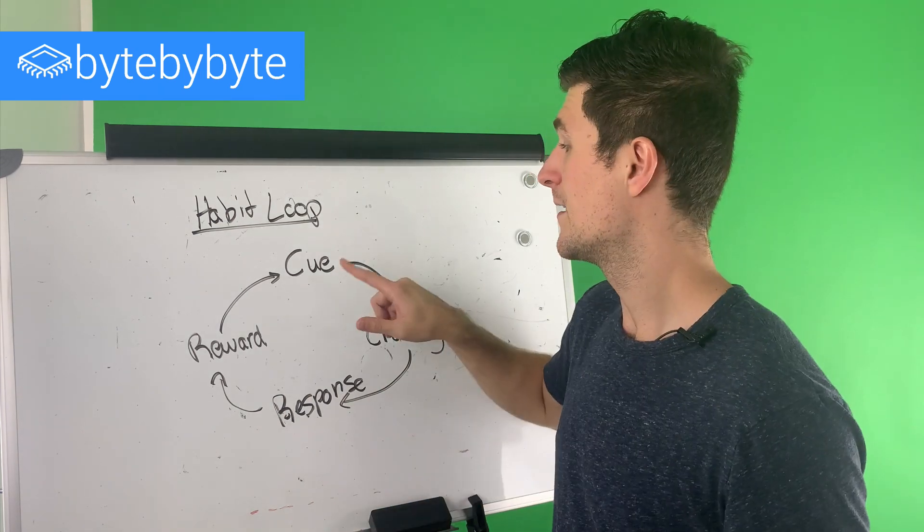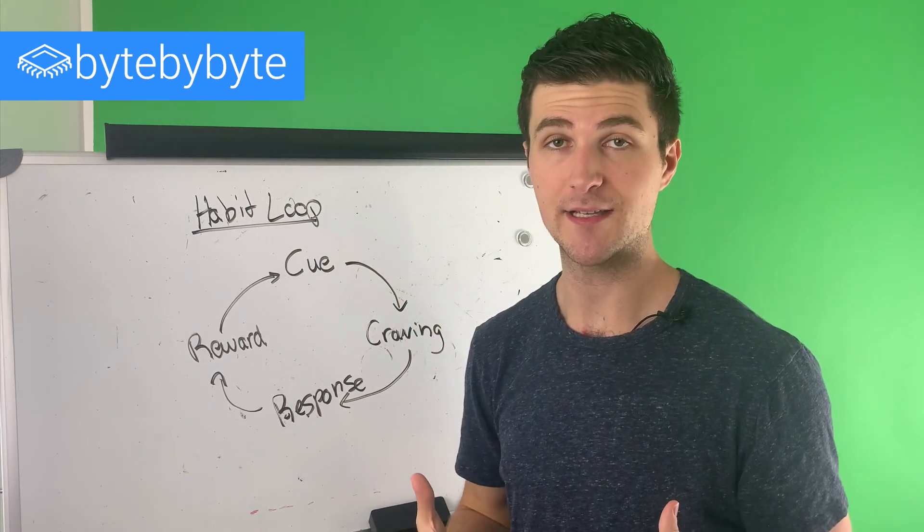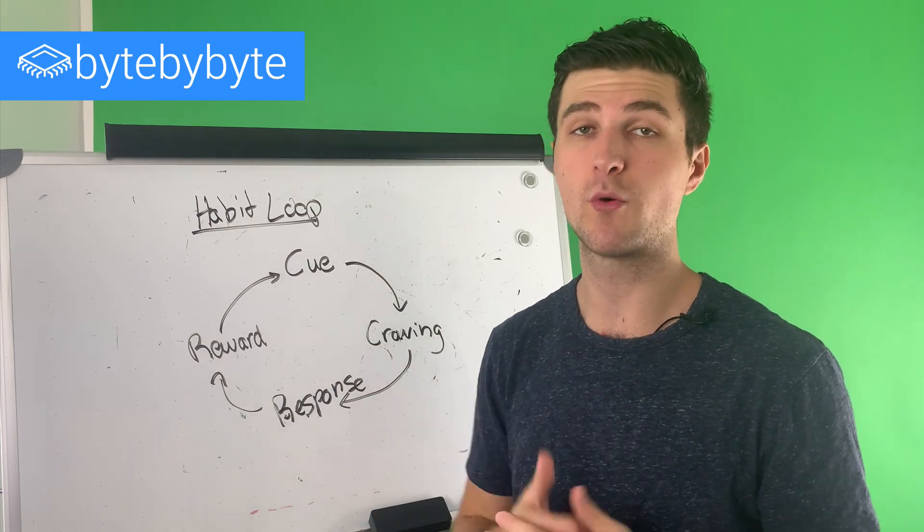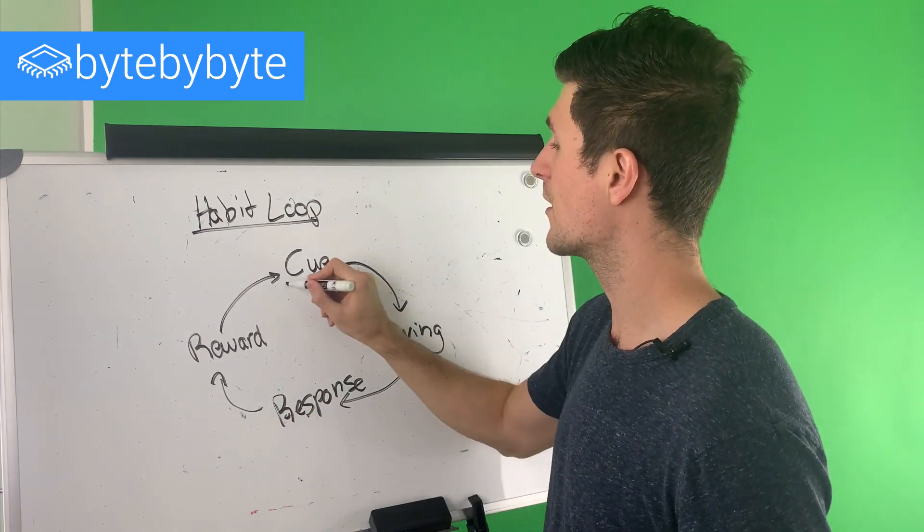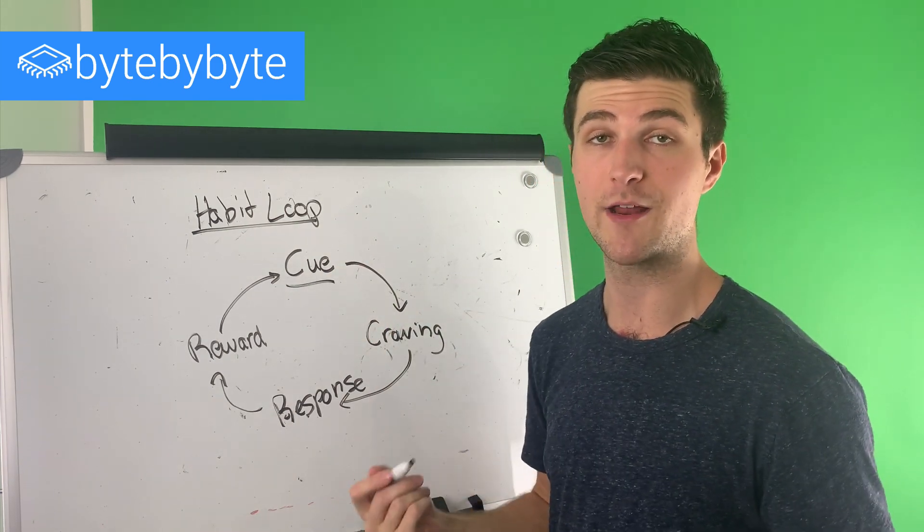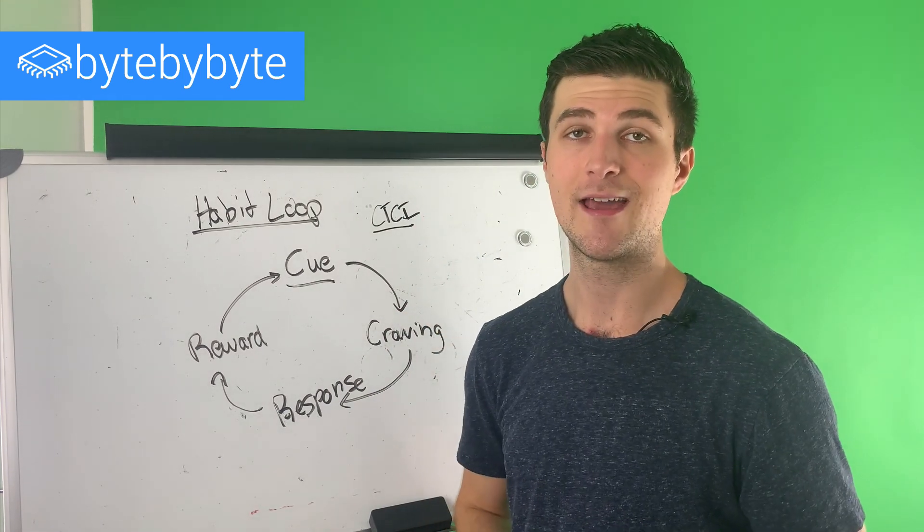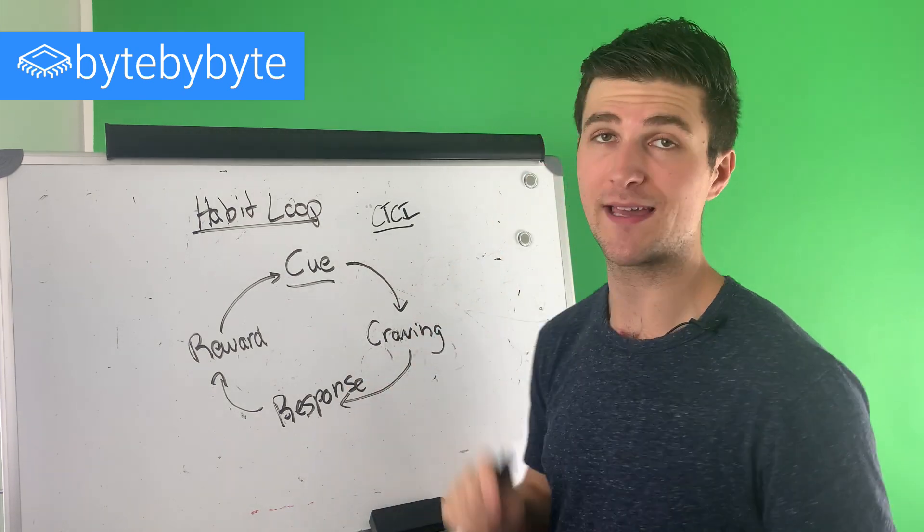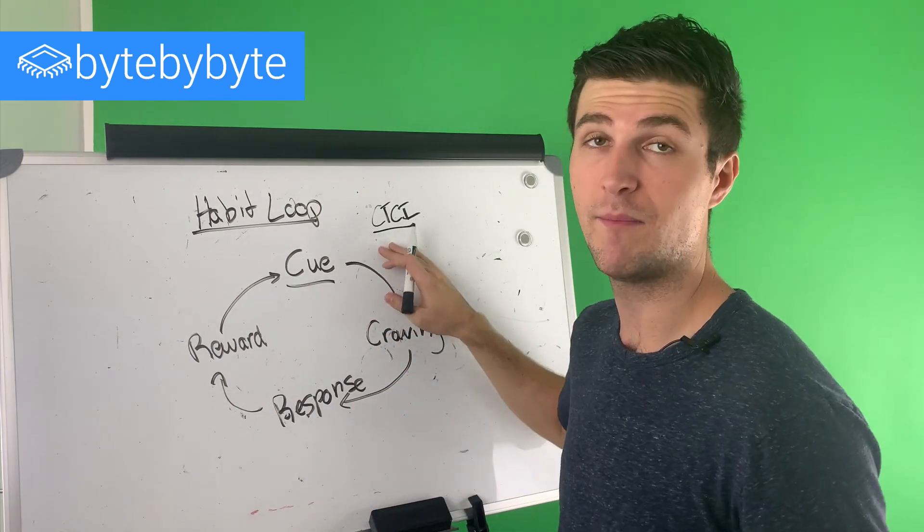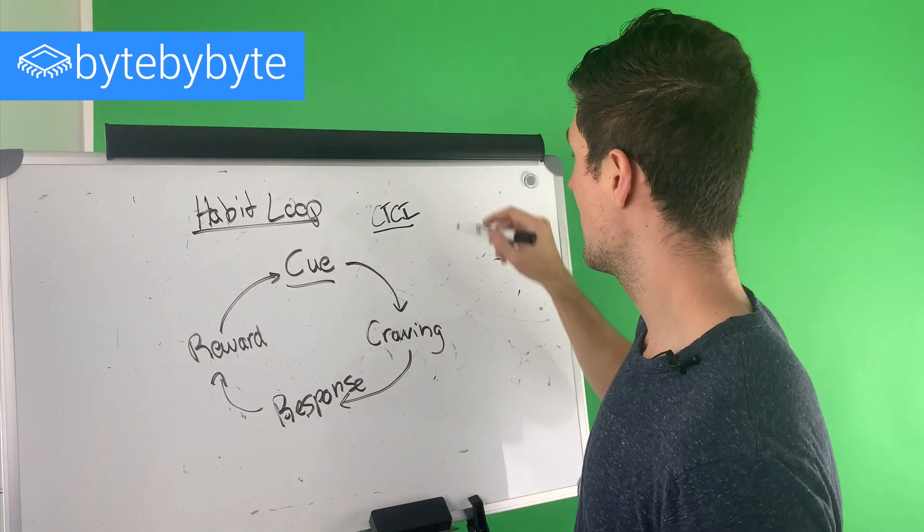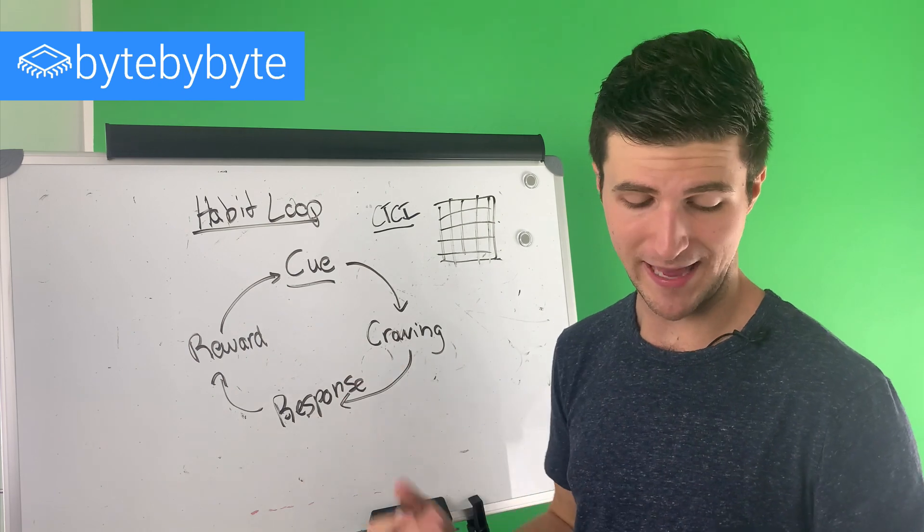So the first thing that we have to do is update our cue. And the big thing with a cue is that we want to make this habit obvious. We want to make it obvious to ourselves somehow that we are going to be starting to do this habit, that we are going to start to do the thing that it is that we want to do. And so in the example of our cue here, if we want to prepare for our coding interviews, what might this look like? Maybe we put a copy of Cracking the Coding Interview on our desk. And that way, when we wake up in the morning, we see Cracking the Coding Interview and it makes it super obvious to us that now is the time to prepare for our interview. So the cue would be, I wake up and I see Cracking the Coding Interview.